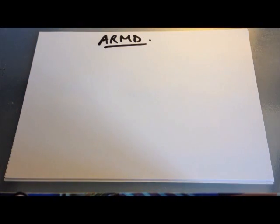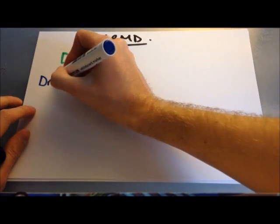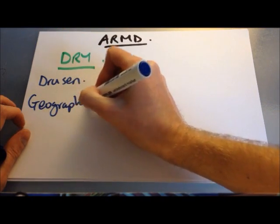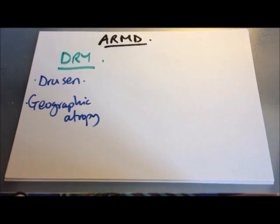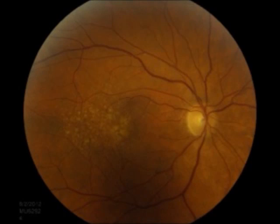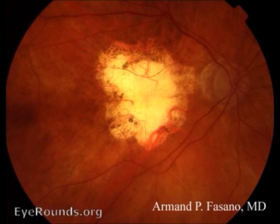In more advanced dry disease you can get geographic atrophy — loss of retinal pigment epithelium and photoreceptors, which die off due to large areas of drusen completely impeding nutrient delivery from the choroid. To summarise dry AMD: the key findings are drusen in early disease, and geographic atrophy in very advanced disease. A fundus picture shows the little yellow spots of drusen around the macula, and geographic atrophy appears as a well-demarcated yellow area, like the shape of an island.